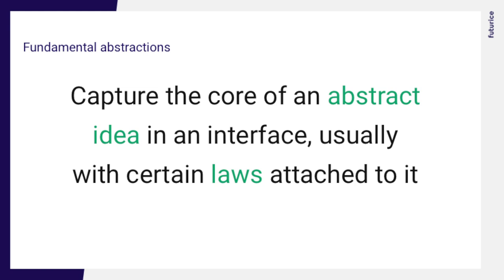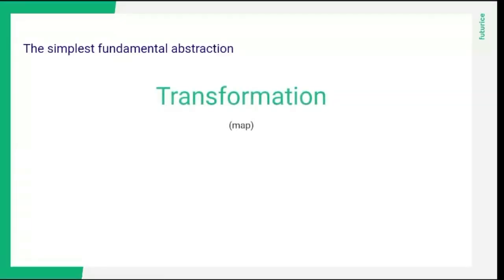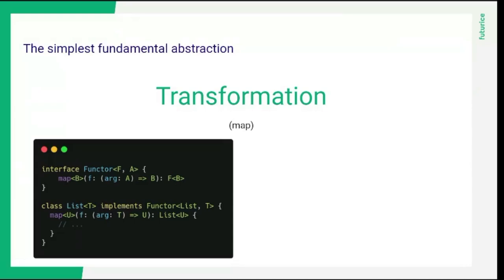Let's start with the simplest fundamental idea, and that is transformation. Stuff can be transformed. This is usually called map in programming. And if we think of map, usually we think about array.map, but it's more versatile than that. I tried to write this in TypeScript. The problem is I'm using a generic interface with two generic arguments, F and A. And the problem is it returns F of B — a generic generic — which is not something possible in any language that uses generics. So this is not valid TypeScript syntax; it's just to convey the idea.